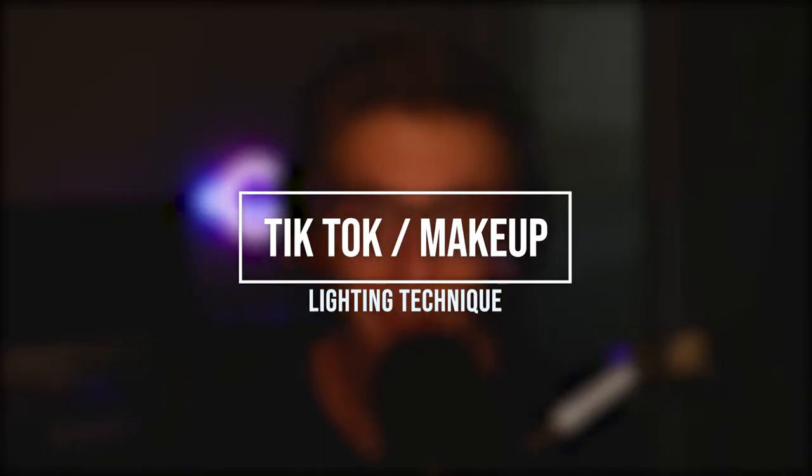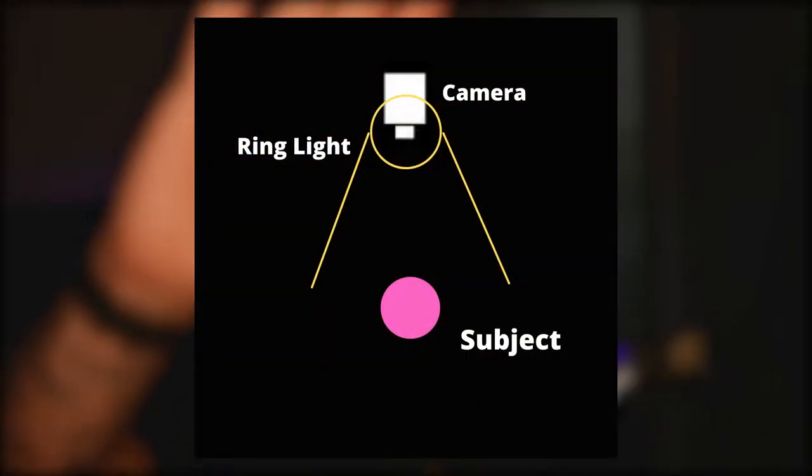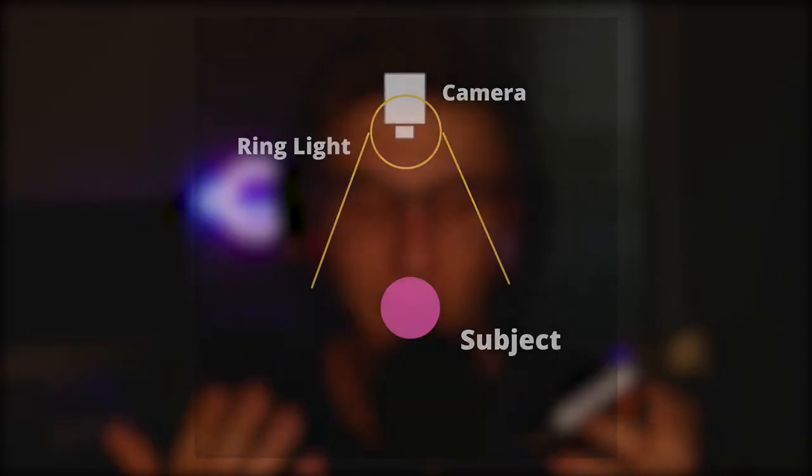The first lighting technique we're going to go over is the TikToker makeup lighting technique. I call it this because there is one single ring light directly in front of the camera and it lights up the entirety of your face. It creates minimal shadows, almost no contour lines, and the reason this is so popular with makeup tutorials is because it allows the creator to show the contour lines with their makeup instead of lights. You can also use this for a dramatic monologue if you want the audience to focus directly on your face.